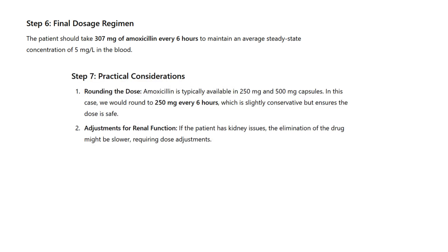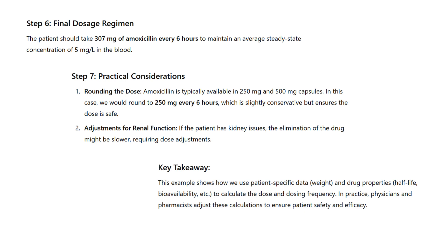Practical considerations: regarding rounding the dose — amoxicillin is typically available in 250 mg and 500 mg capsules. In this case, we would round to 250 mg every 6 hours, which is slightly conservative but ensures the dose is safe. Regarding adjustments for renal function: if the patient has kidney issues, elimination of the drug might be slower, requiring dose adjustments. Key takeaway: this example shows how we use patient-specific data like weight and drug properties like half-life and bioavailability to calculate the dose and dosing frequency. In practice, physicians and pharmacists adjust these calculations to ensure patient safety and efficacy.